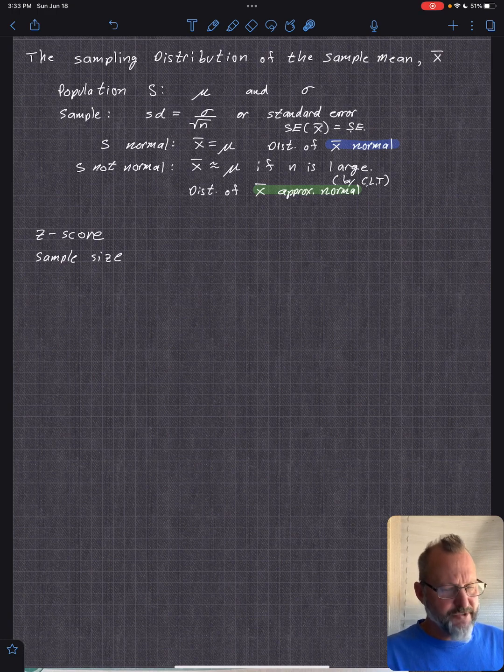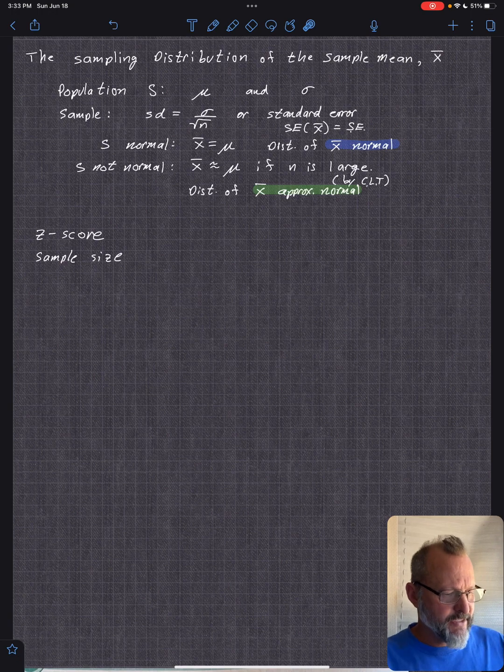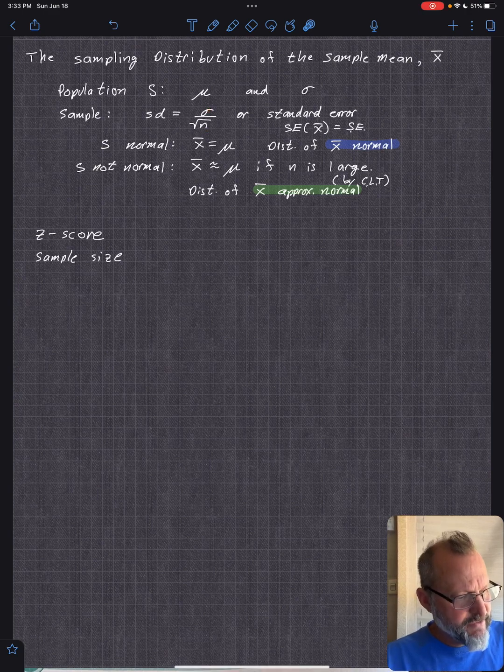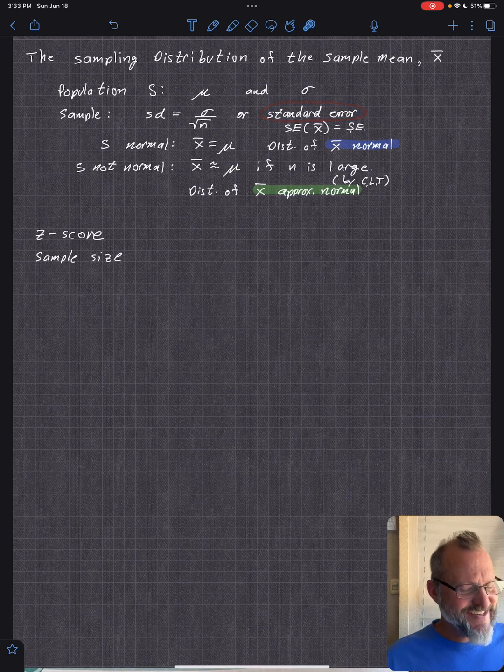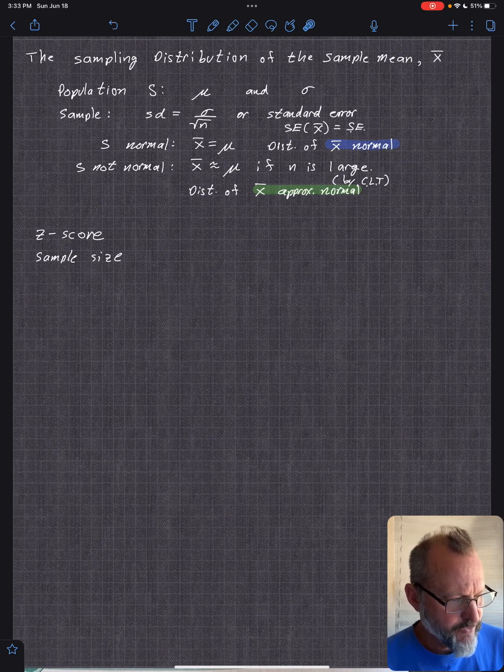Then when you sample from that, the standard deviation is sigma over root n, which we stated. That is called the standard error. So the standard error of the sample population is sigma over root n of the square root of the sample size.